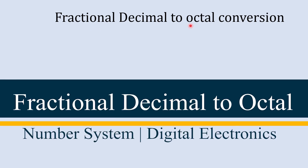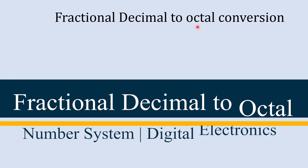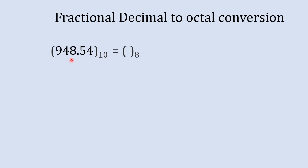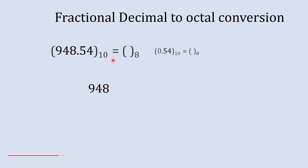Fractional decimal to octal conversion or fractional octal to decimal conversion is just a two-step process, and in this video we are going to do that. So without wasting time, let's get started. First of all, we'll take one fractional decimal number and we are going to convert this number into an octal number. We'll take the whole number part 948 and keep the fraction number part aside for now.